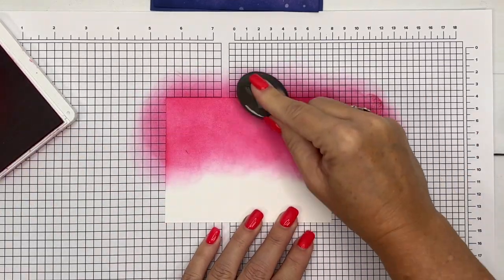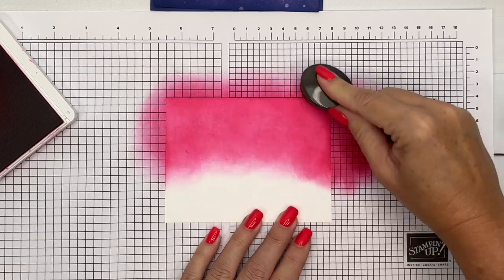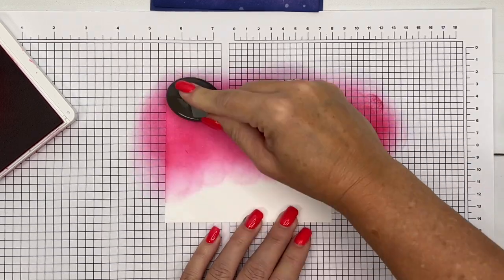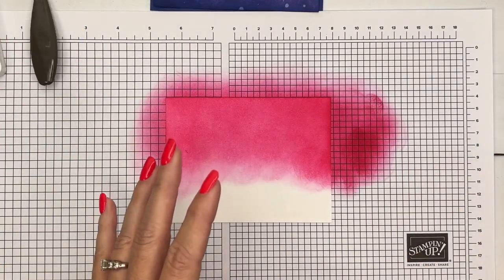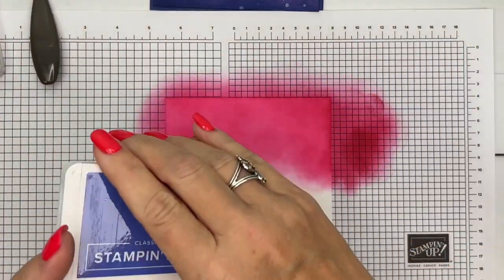So just keep blending, blending, blending until you feel like, okay, I've got enough of the Melon Mambo. Now we're going to switch over to the bottom and I'm going to use Orchid Oasis.